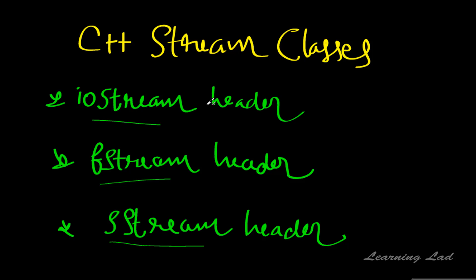In the iostream header, we have the istream class, ostream class, and iostream class. The fstream header defines classes that help us work with files. For example, fstream defines ifstream (input file stream), ofstream (output file stream), and fstream which contains both input and output operations. Then we have sstream — which stands for string stream — containing istringstream (input string stream), ostringstream (output string stream), and stringstream.